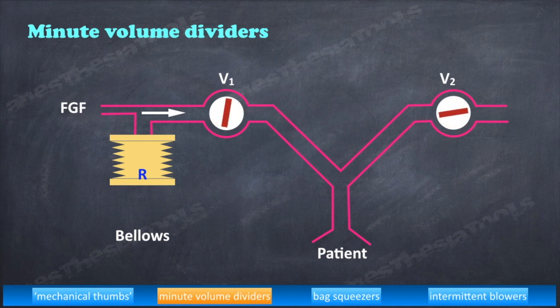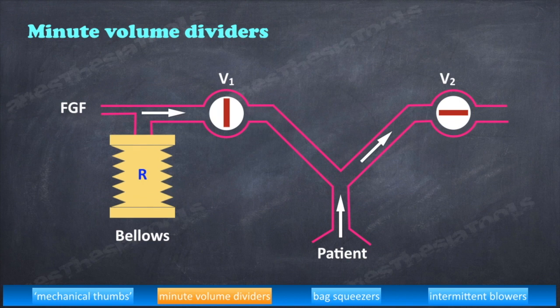When V1 closes, V2 opens and exhalation is permitted, allowing the reservoir bag to refill in preparation for the next breath. It may be noted that all of the driving gas that is supplied is delivered to the patient. These ventilators are referred to as minute volume dividers as they merely divide up the intended minute volume supplied by the driving gas. The most common type used was the series of ventilators designed by Dr. Roger Manley.